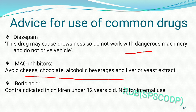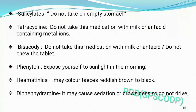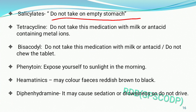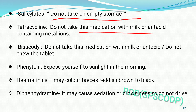The next drug is boric acid — boric acid is contraindicated in children under 12 years and is not for internal use. Then salicylate — do not take salicylate on an empty stomach, because salicylic acid produces acidity, and ulcer conditions can develop. Next drug is tetracycline — do not take this medication with milk or antacids containing metal ions, because calcium (a metal ion) forms a complex with tetracycline and inhibits its absorption.